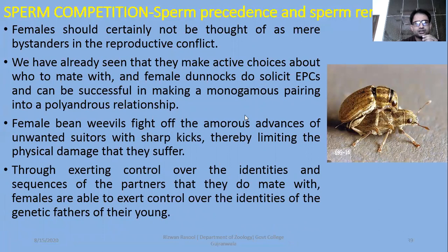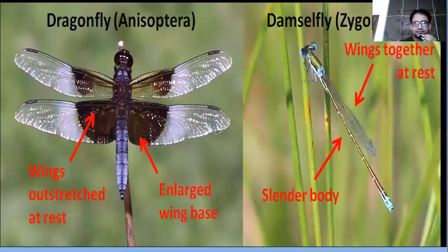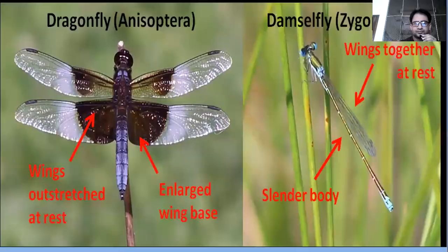Females should certainly not be thought of as mere bystanders in the reproductive conflict. We have already seen that they make active choices about who to mate with. Female dunnocks do solicit extra pair copulation and can be successful in making a monogamous pairing into a polyandrous relationship. For example, female bean weevils fight off the advances of unwanted suitors with sharp kicks, thereby limiting the physical damage they suffer. During copulation they reduce the damage, and through exerting control over the identity and sequence of the partners they mate with, females are able to exert control over the identities of the genetic fathers of their young. These are certain strategies and terms used during the sexual conflict of males and females in mating.